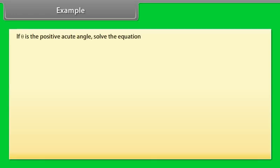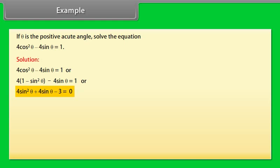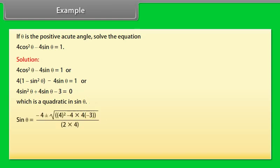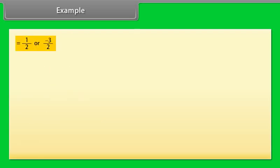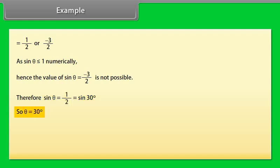Example: If θ is a positive acute angle, solve 4cos²θ − 4sin θ = 1. Replacing cos²θ with (1 − sin²θ): 4(1 − sin²θ) − 4sin θ = 1, giving 4sin²θ + 4sin θ − 3 = 0, a quadratic in sin θ. Using the quadratic formula: sin θ = (−4 ± √(16 + 48))/8 = (−4 ± 8)/8 = 1/2 or −3/2. Since |sin θ| ≤ 1, the value −3/2 is rejected. Therefore sin θ = 1/2 = sin 30°, so θ = 30 degrees.